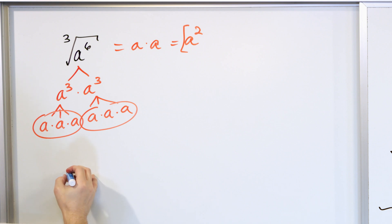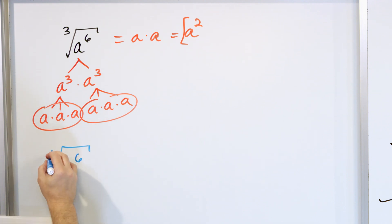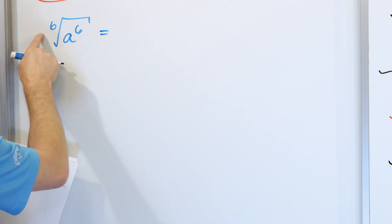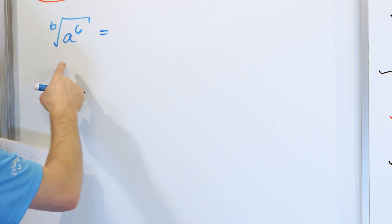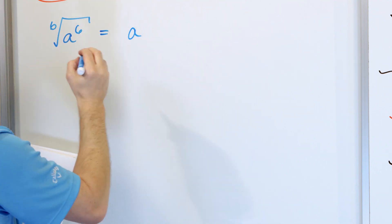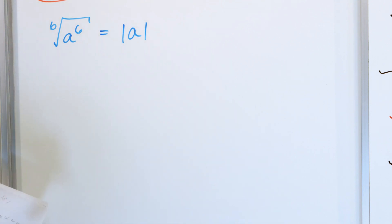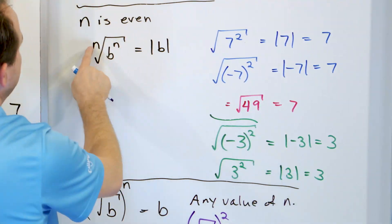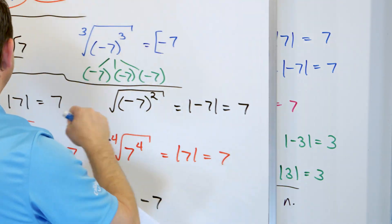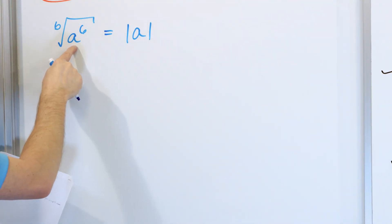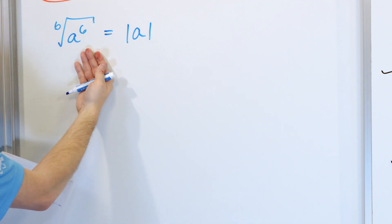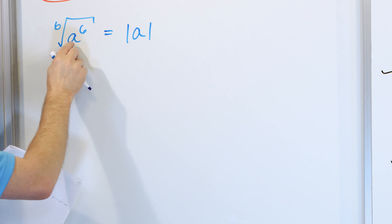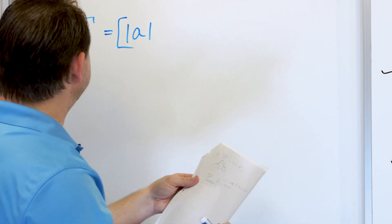Now consider the sixth root of a to the sixth power — that is a cancellation. It's an even power, so when you cancel it you get a left over, but it must be the absolute value of a. If you plug in a negative value for a, squaring it up gives a positive, so the answer won't equal the negative you started with. This equality only holds if a is positive, which is why the answer is the absolute value of a.